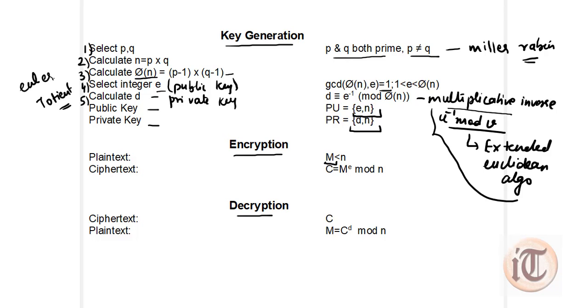This is how we can use the RSA algorithm for public key encryption with this step-by-step procedure. If you have any queries, you can ask in the comment section. Keep watching our videos — thank you so much.